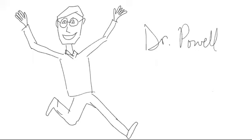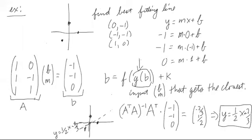Welcome to a lesson with Dr. Powell. Let's take another look at the example that we had with least squares approximation, finding a best-fitting line. And we found it was y is equal to 1 half x minus 2 thirds, given these points.